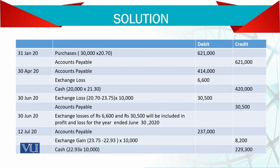Purchases: 30,000 yen × 20.7 = 621,000 debit; accounts payable 621,000 credit. On 30th April, payment of 20,000 yen is made at 21.30. Accounts payable must be debited at the original rate. But payment is being made at 20.7, which is 414,000. The difference between the two amounts gives an exchange loss of 6,600 — you are paying more.